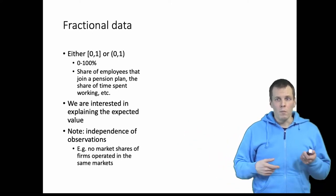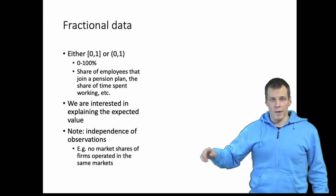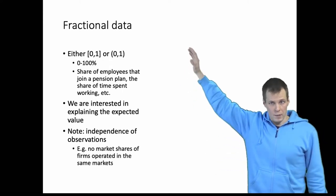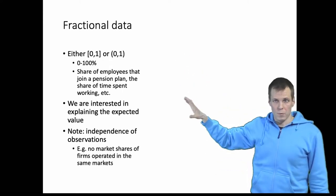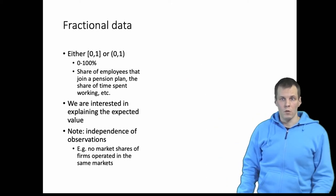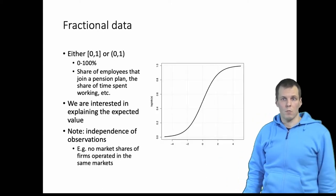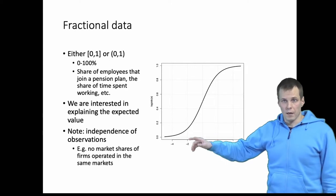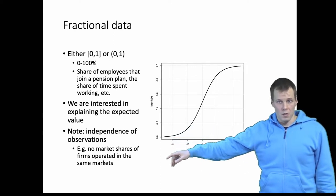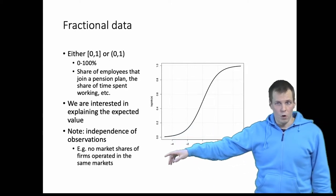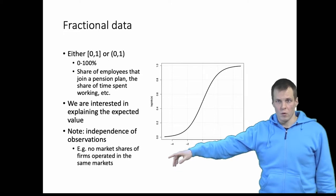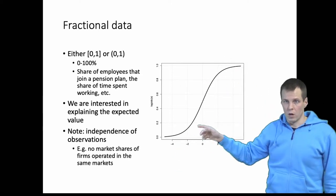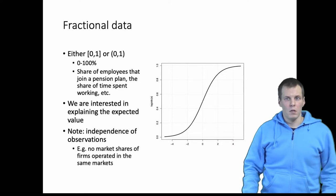How we model data that varies between zero and one is that we use the Esker models. Or we can use a linear model if we are sure that the predictions don't go beyond the range of zero and one. More typically, we use the Esker model.